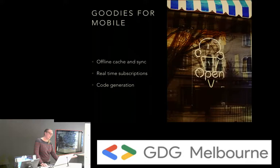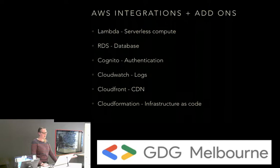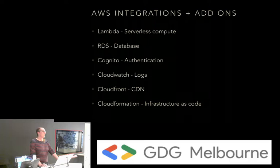You also get a lot of code generation for the client by importing your schema and queries so you don't have to write them manually. If it's a new project and you don't have a lot of these things to begin with, it's a really powerful feature of AppSync that it integrates so well with Lambda, RDS, and Cognito — the authentication system. All of these you can get up and running very quickly.